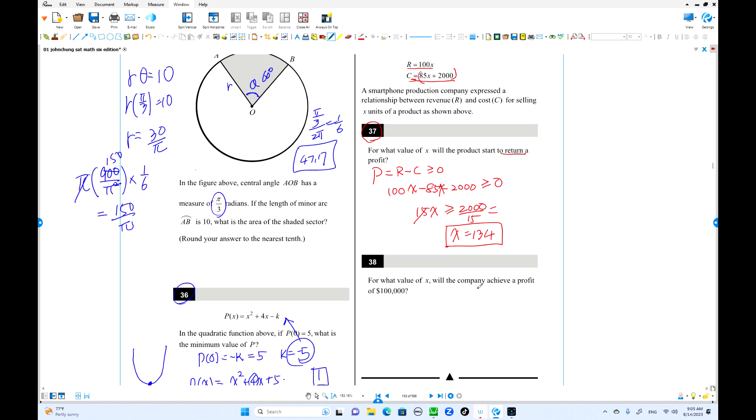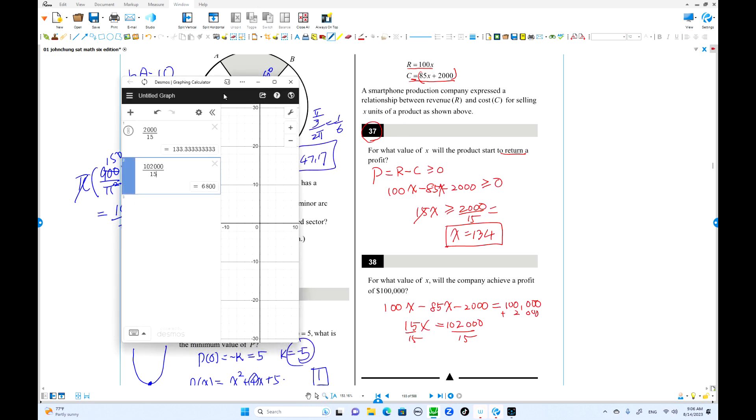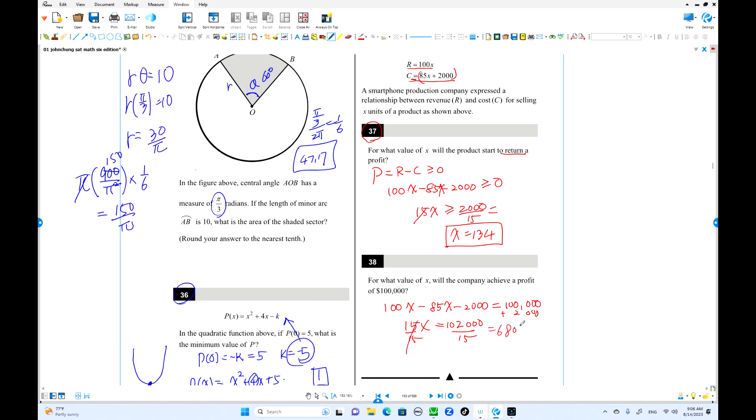Problem 38: For what value of x does the company achieve $100,000 profit? Same approach: 100x minus 85x minus 2000 equals 100,000. So 15x equals 102,000. Divide by 15 to get x equals 6,800. If they produce 6,800 units, they'll have $100,000 profit.